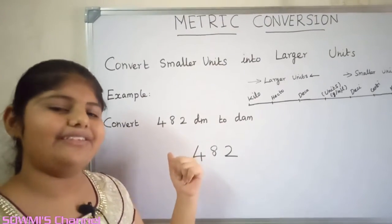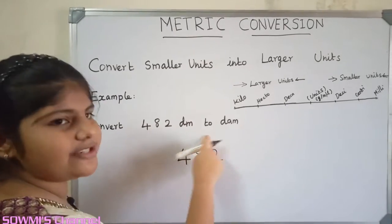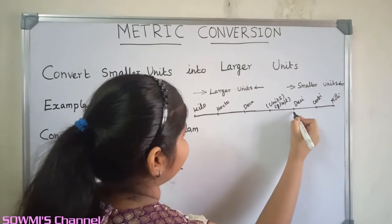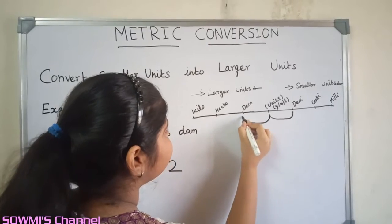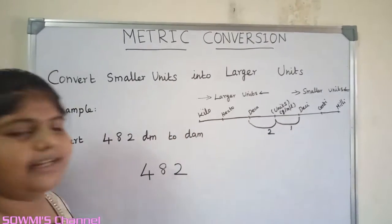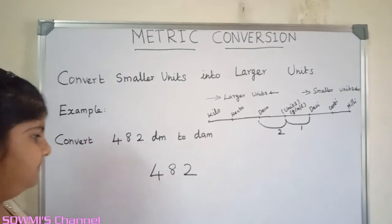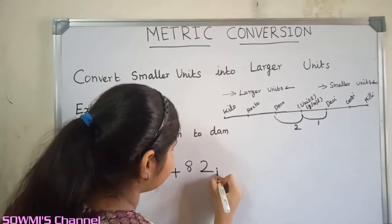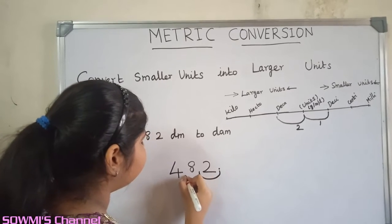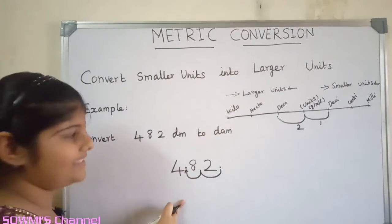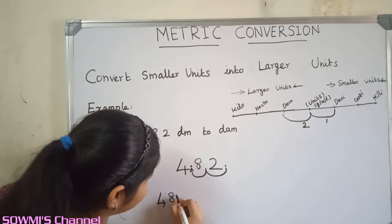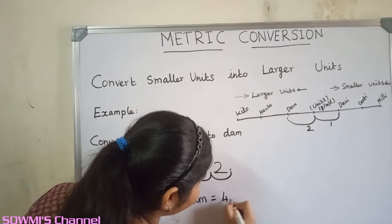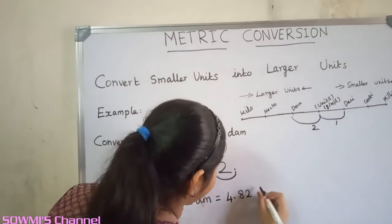Let us see another example. Convert 482 decimeters to hectometers. First we have to count the jumps from decimeters to hectometers. There are two steps to the left. From the decimal point, we have to move two steps to the left. So the answer is 482 decimeters is equal to 4.82 hectometers.